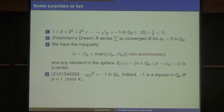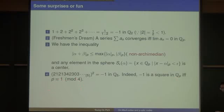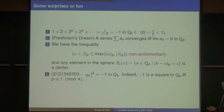In Q_5, there is a square root of minus 1. In fact, minus 1 is a square in Q_p if and only if p is congruent to 1 modulo 4. So in some sense, the complex numbers C are not the only field with a square root of minus 1 — there are many others.